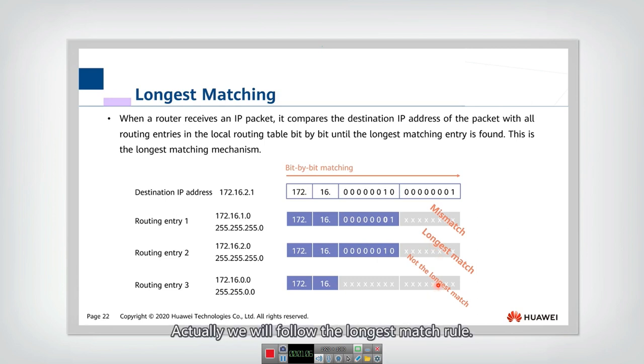Then which one should we select? We will follow the longest match rule. This one matches with longer bits, so we will transmit the packet through this entry. This is better than this one.